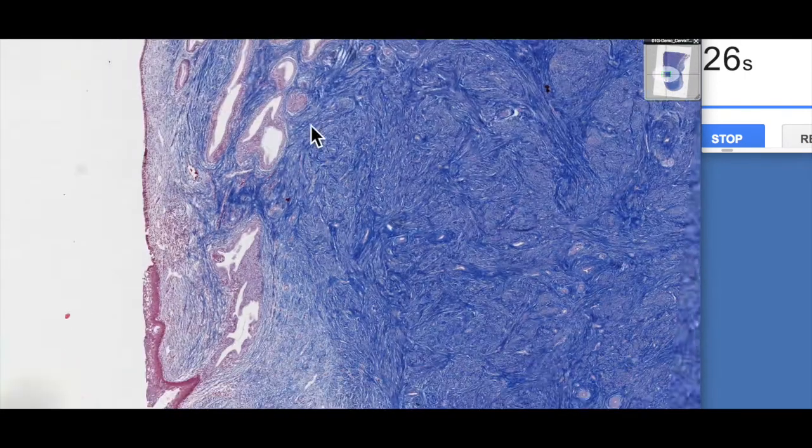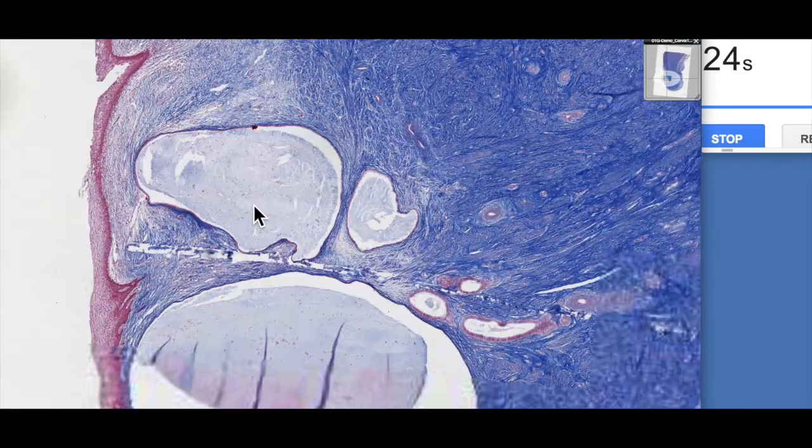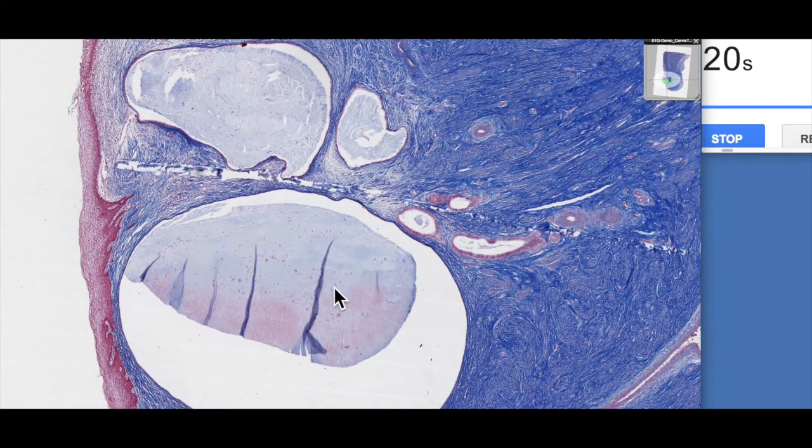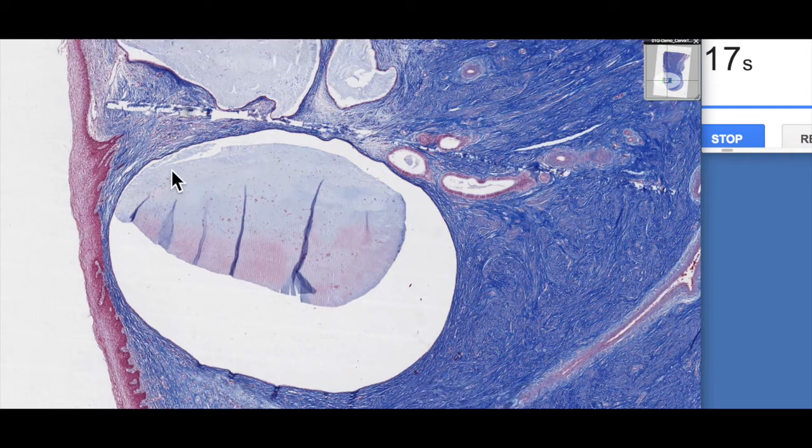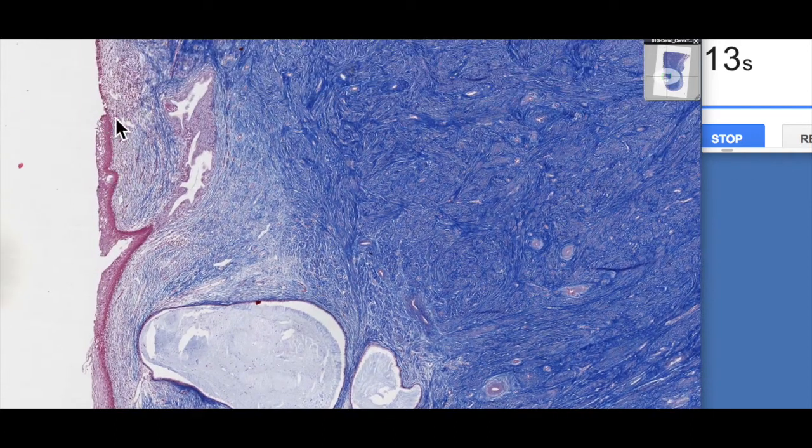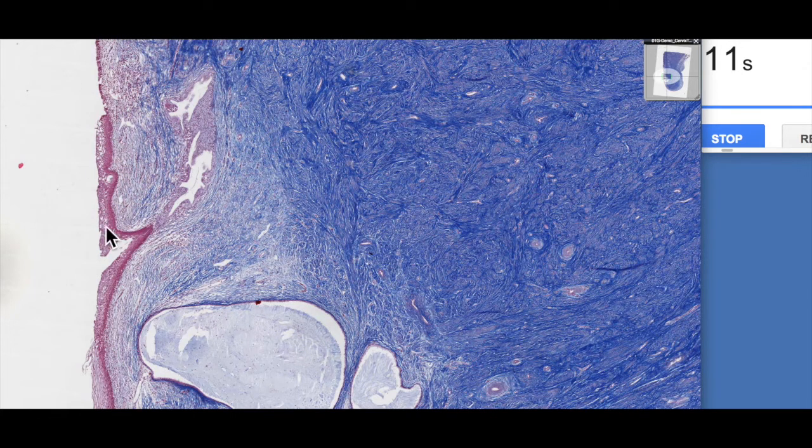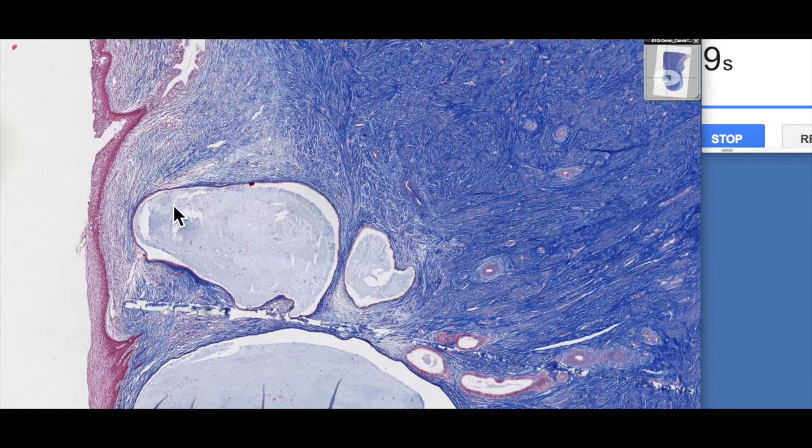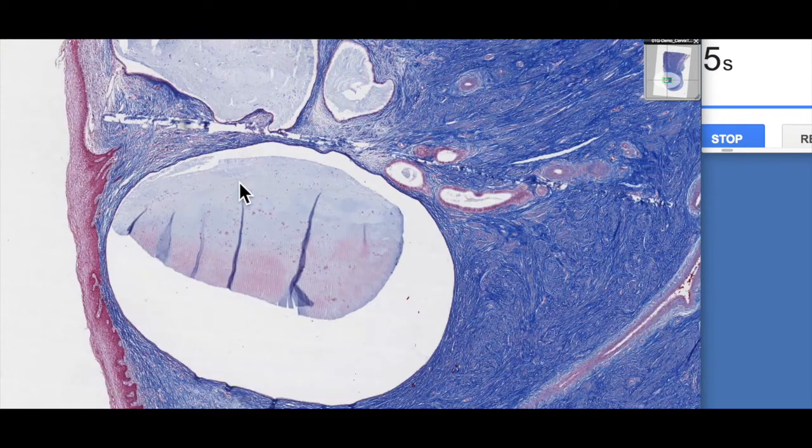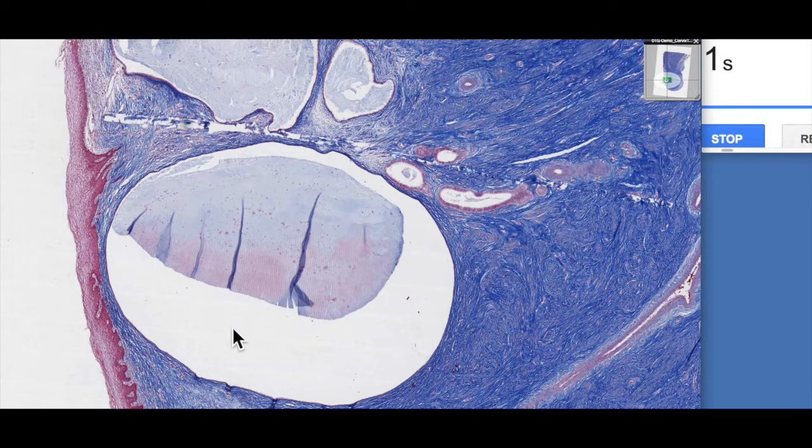Now these big follicle-like structures, these are known as nabothian follicles or cervical cysts. These actually were former endocervical glands that became trapped when the endocervix actually got transformed into this ectocervix-like structure. Unfortunately, we don't have time to talk about why that is, but they're a common feature of the cervix. So you can keep an eye out for those.